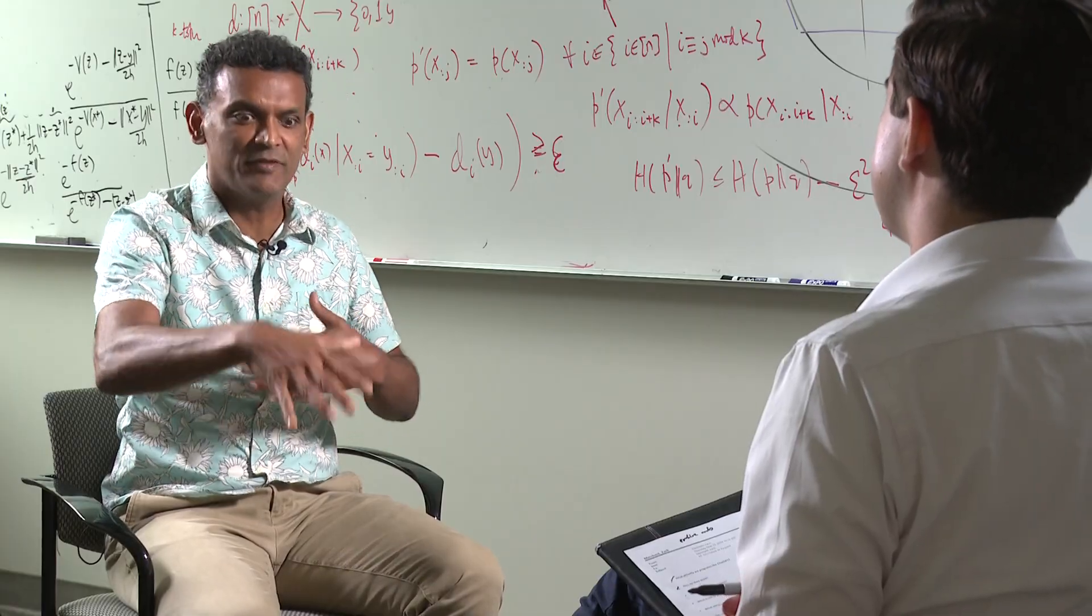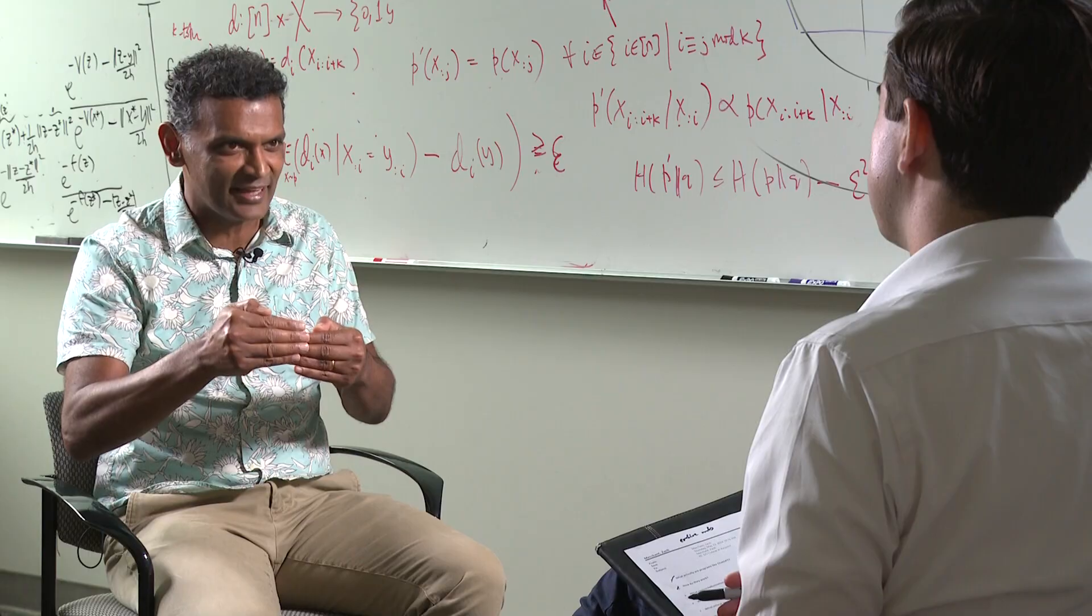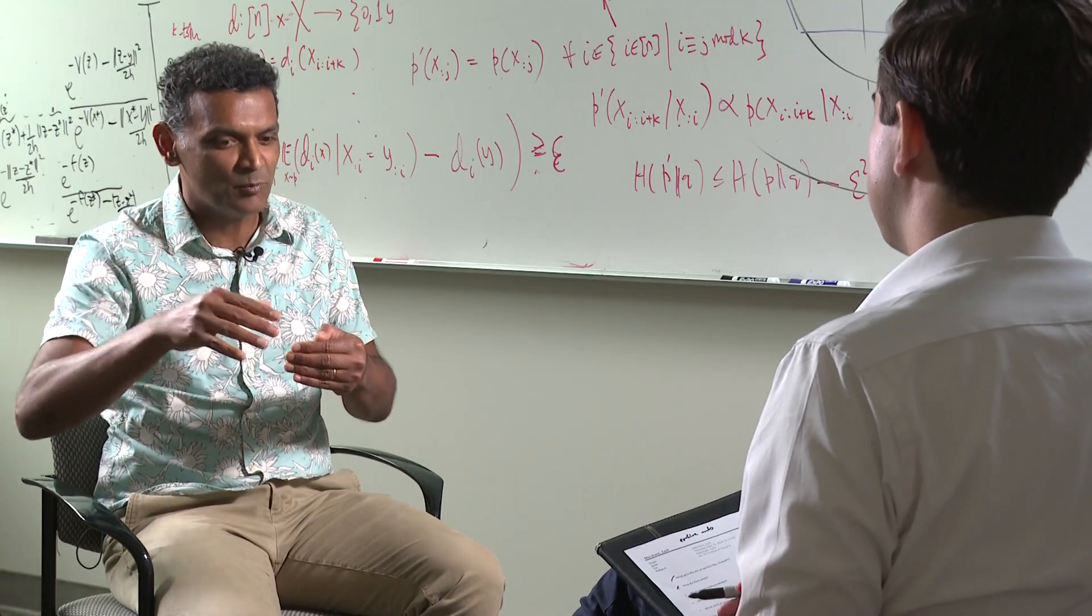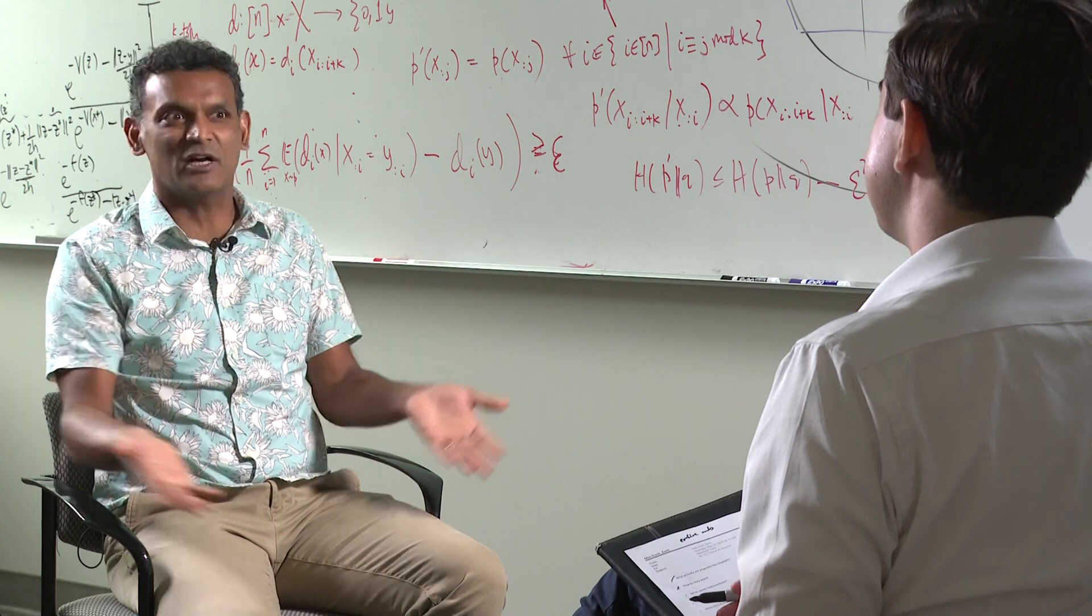And it will pick something, and then now you have a next, and next, and next. It's literally doing something very local. It's picking the next item, next item, next item. But it has learned the distribution very well. So it looks like something that could have just occurred.